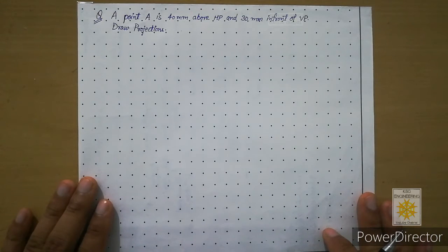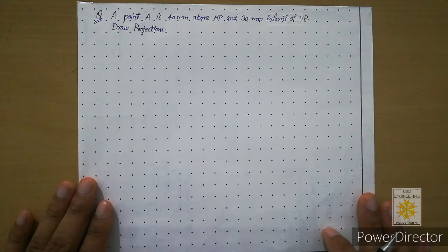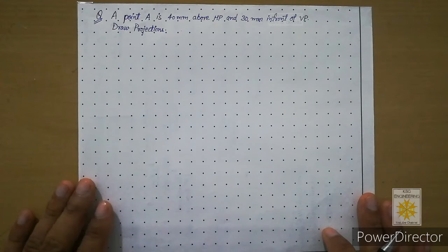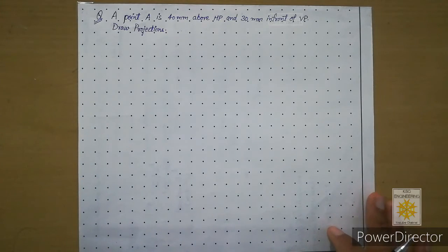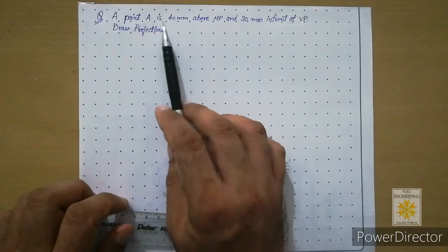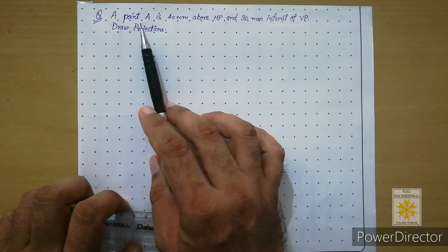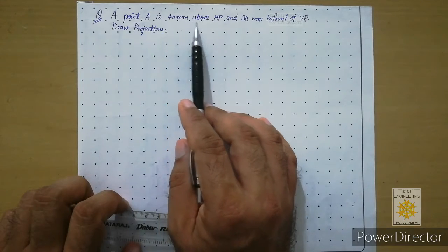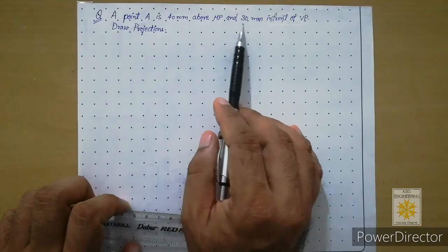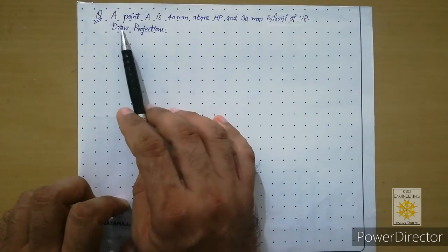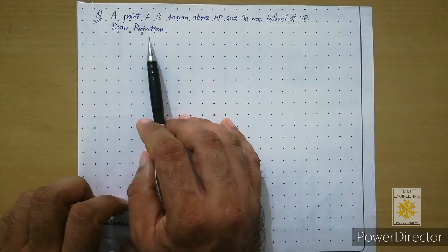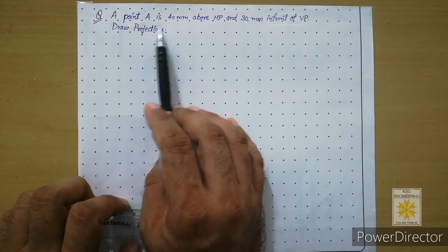Welcome to another lecture on engineering graphics. Today we will learn how to attempt a question of projections of point on grid sheet. Let us read the question: a point A is 40 mm above HP and 30 mm in front of VP. Draw projections.